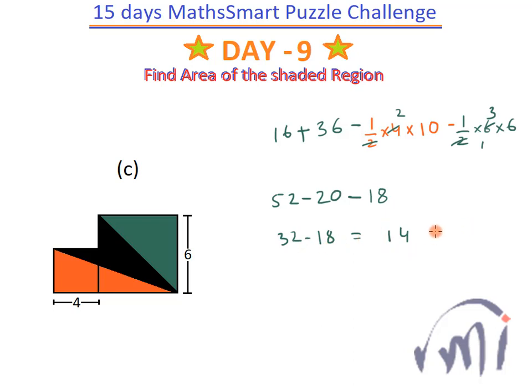So the area of the shaded region is 14 square units. That's all for this video. In a few hours I'll be posting the problem set for day 10. Keep watching MathSmart — bye bye till then!